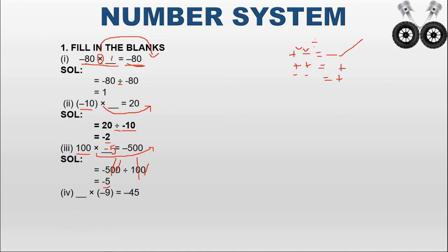The fourth problem is: dash into minus 9 equals minus 45. The multiplication operator in the LHS becomes division on the RHS. We write minus 45 divided by minus 9, keeping the sign as minus 9. 45 divided by 9 equals 5. Both integers have the same sign (negative), so the result is positive. The answer is plus 5.